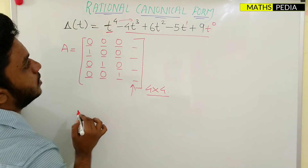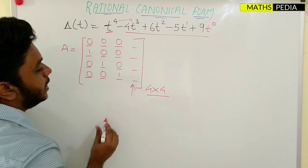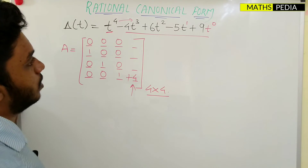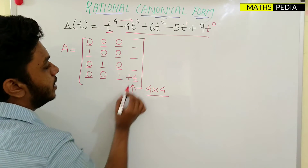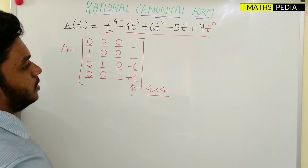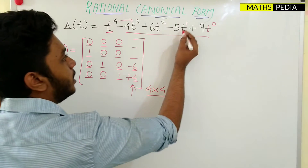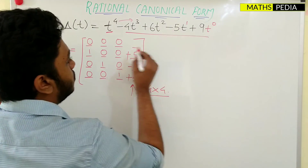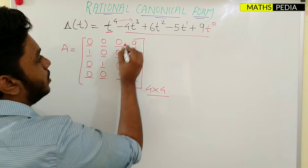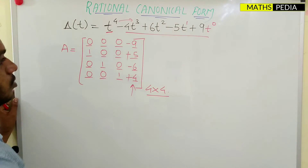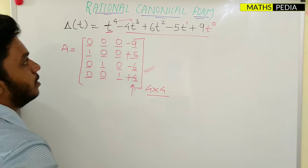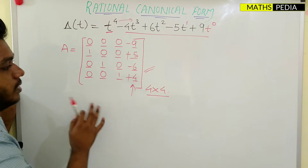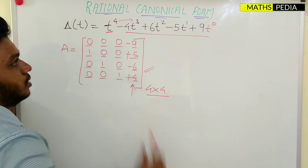For the fourth column, starting from the bottom: T³ has coefficient -4, change the sign to +4. T² has coefficient 6, change the sign to -6. T power 1 has coefficient -5, change the sign to +5. T power 0 has coefficient 9, change the sign to -9. So this is the required matrix of rational canonical form for the given characteristic equation.